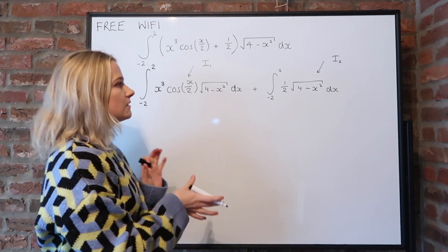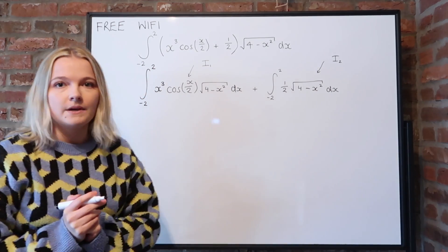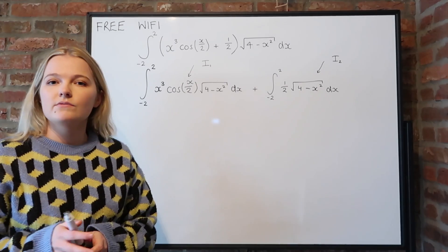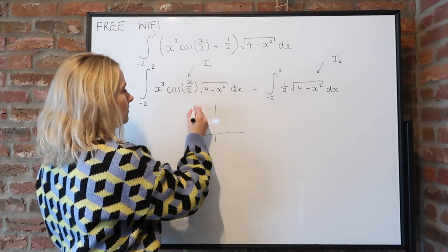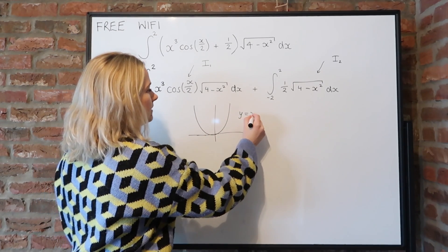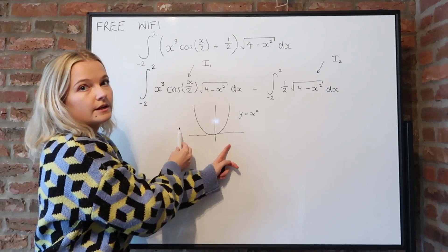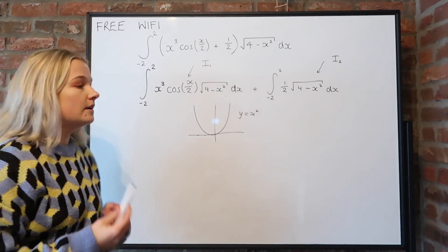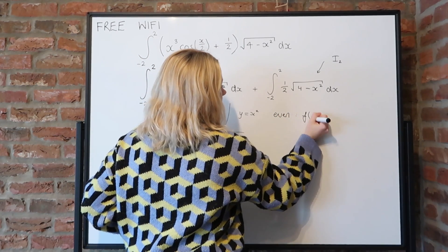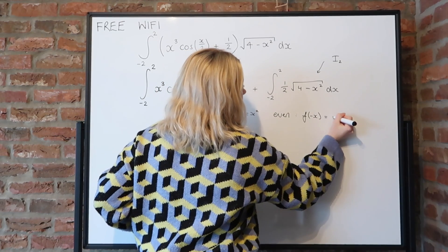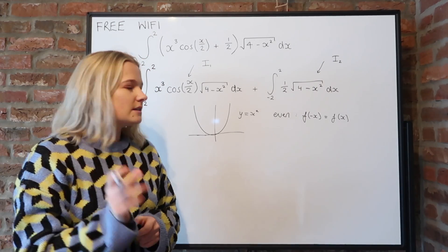Both of these integrals have little tricks you can do with them. The first trick involves odd and even functions. Even functions are graphically symmetrical — for example, y equals x squared is symmetrical around the origin. An even function satisfies f(−x) = f(x).